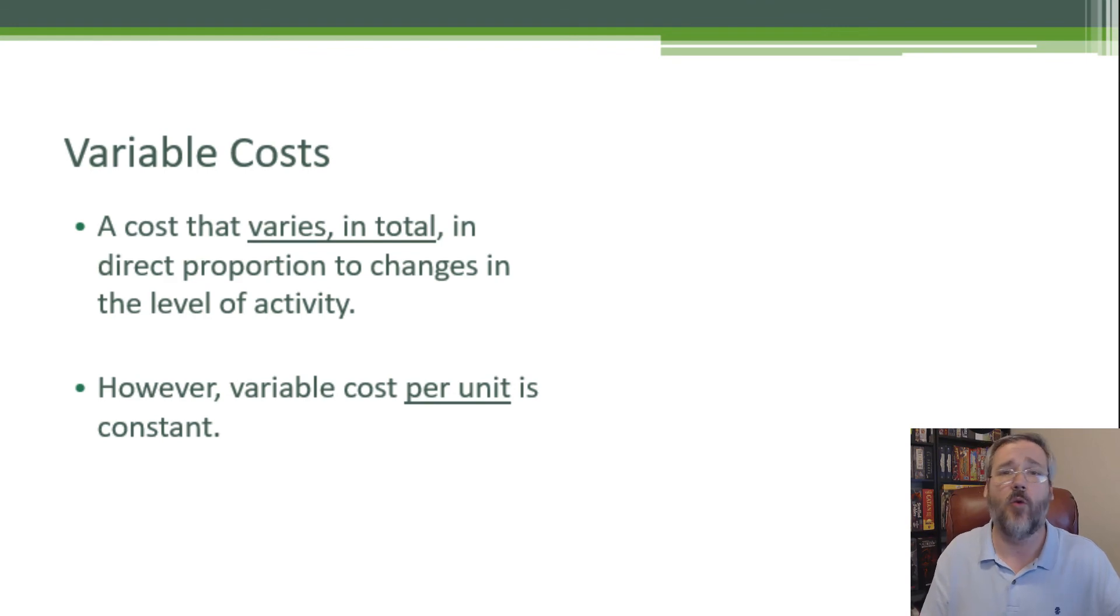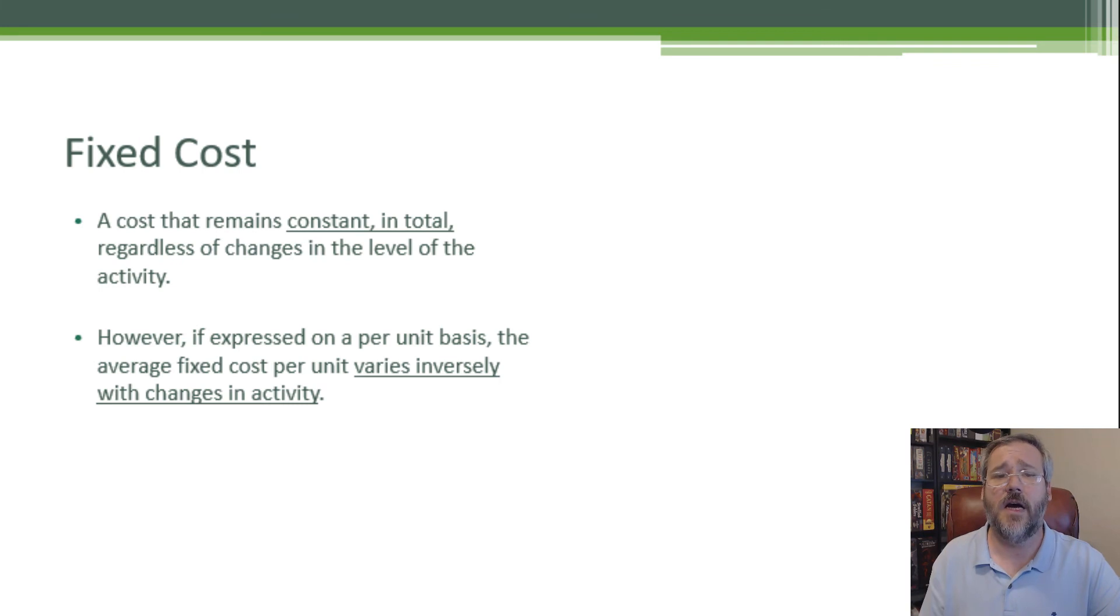Our cost is going to vary between if we produce one or 100, but our cost per unit is going to remain the same. Fixed costs are costs that remain constant in total regardless of the changes in level of activity. Whether we produce one or 100, a fixed cost is going to remain the same. If we put it though on a per unit basis, our cost will vary inversely with changes to the level of activity. That is to say, our cost per unit will go down the more we produce. That's the opposite of our variable costs. Variable costs, as we produce more, our costs are going to go up. Fixed costs, as we produce more, our fixed cost per unit is going to go down.